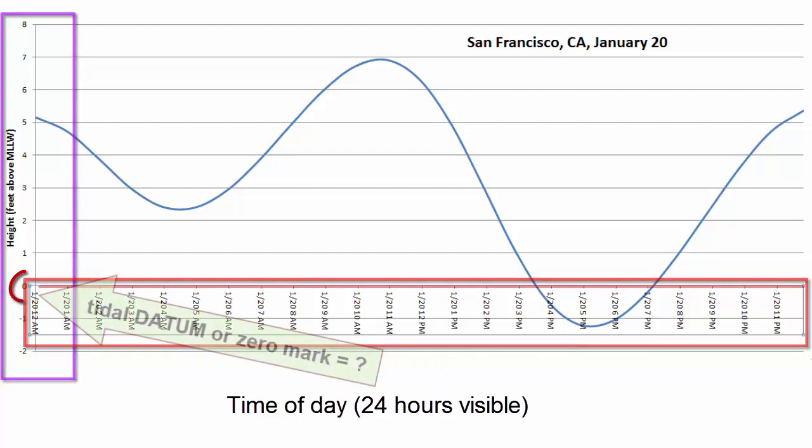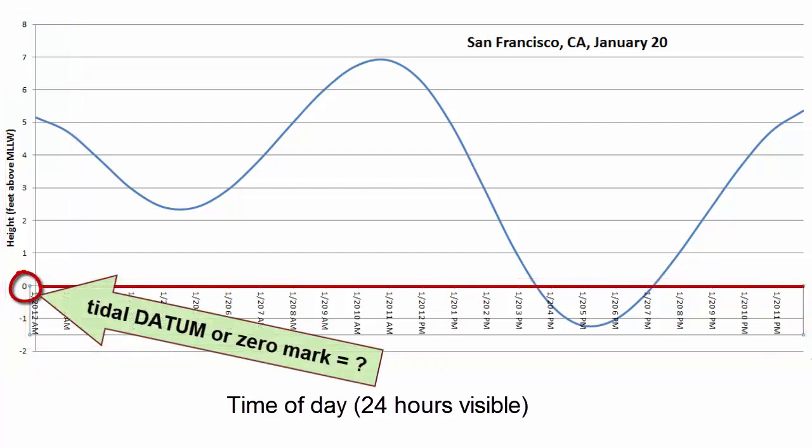Note that the y-axis uses a zero level that is not the equilibrium level of this wave. What is that zero level, otherwise known as tidal datum?